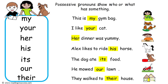Now introduce kids to possessive pronouns. They show who or what has something. The seven possessive pronouns kids are going to work on are: my, your, her, his, its, our, and their.